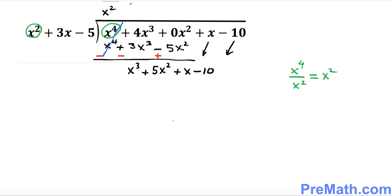Now let's go ahead and start the process all over again. Look at the leading term, which is x³. Write it down: x³ divided by the leading term which is x². When you divide, you're going to get x.